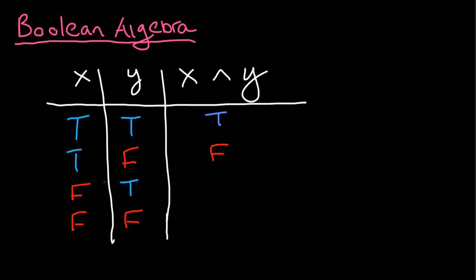The same logic applies if X is false and Y is true. So I didn't buy oranges, but I did buy apples. The statement 'Johnny bought oranges and apples' is false because I didn't buy oranges. And in the last case, Johnny didn't buy oranges and Johnny didn't buy apples. So the statement 'Johnny bought apples and oranges' is just entirely false — I didn't buy either of those two things.